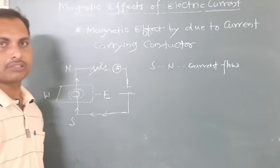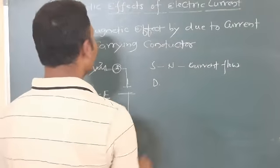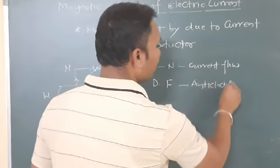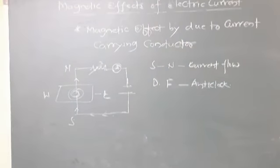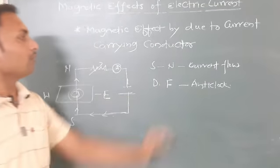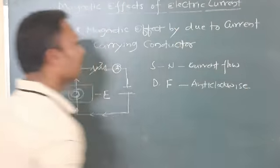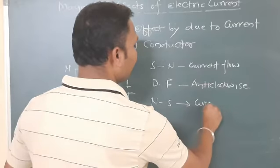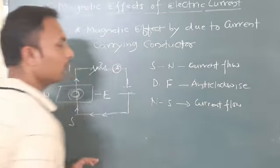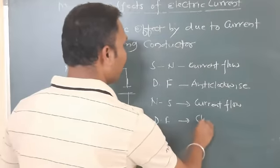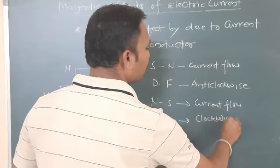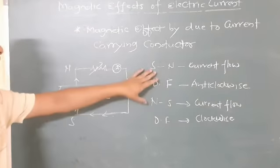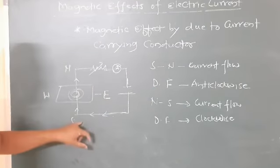From south to north the current flows means the direction of magnetic field is anticlockwise. If the current is flowing from north to south, the direction of the magnetic field is clockwise. Current flowing bottom to top is anticlockwise; north to south is clockwise.